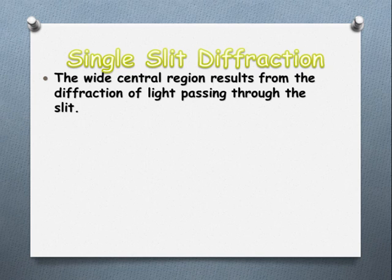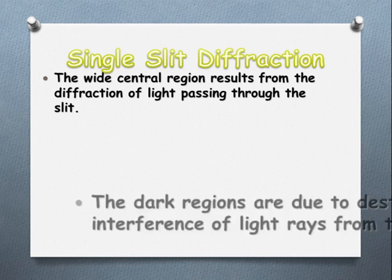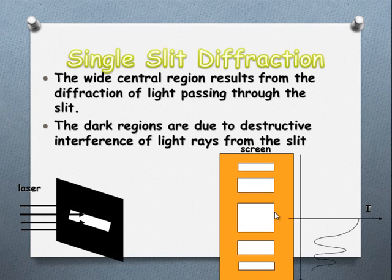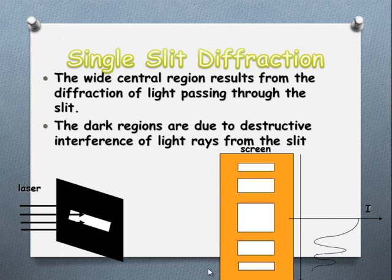We get a large maximum arriving in the middle and then some alternating dark and light bands. What I've tried to replicate here is a large band, and then the width of them actually decreases and the intensity drops off as we get further away.